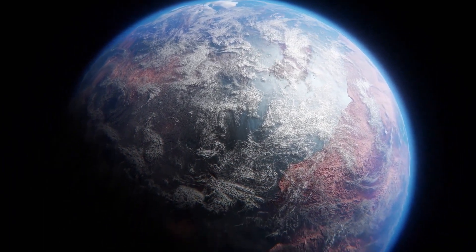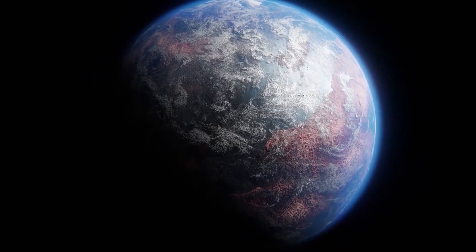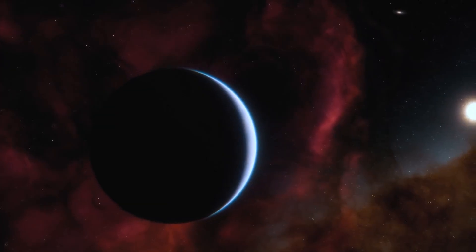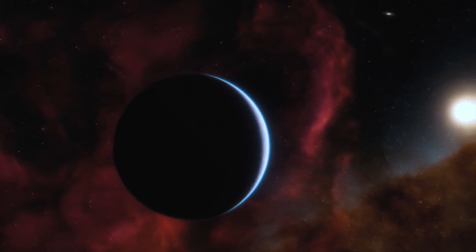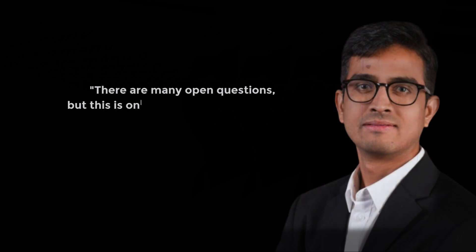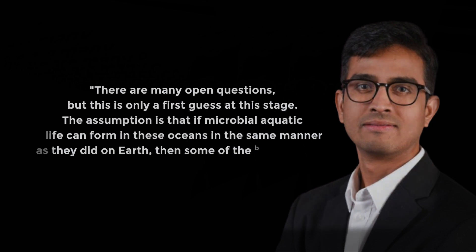However, whether the K2-18b has a separate ocean lacks clarity, as if we see from the outside planet, it becomes nearly impossible to detect it with just the mass and radius of K2-18b. Madhu Sedan made another statement. There are many open questions, but this is only a first guess at this stage. The assumption is that if microbial aquatic life can form in these oceans in the same manner as they did on Earth, then some of the biosignatures may also be common.